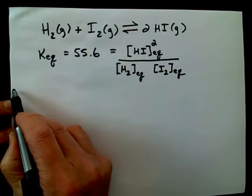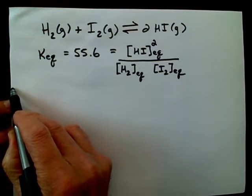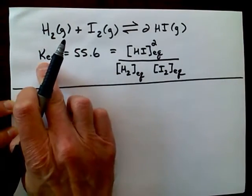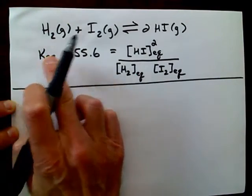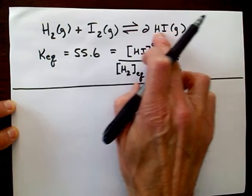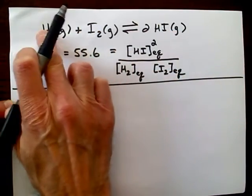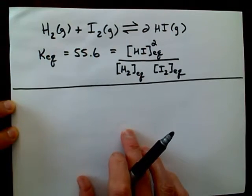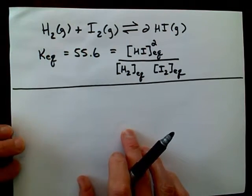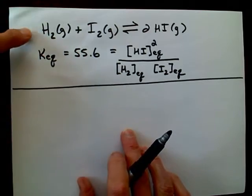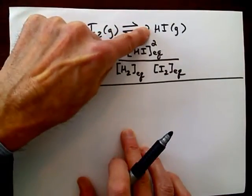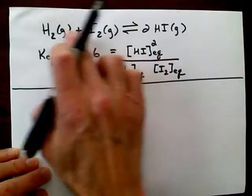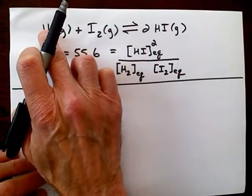We're now going to try to use the value of the equilibrium constant and our knowledge of our concentrations of all of these species to figure out whether the reaction is going to move from reactants to products, or maybe in reverse, from products back to reactants.